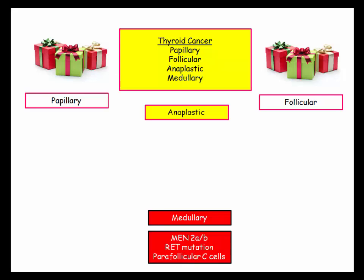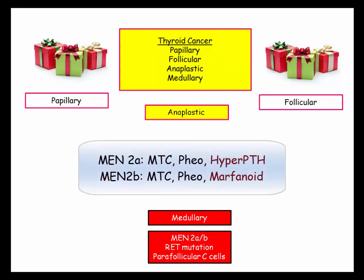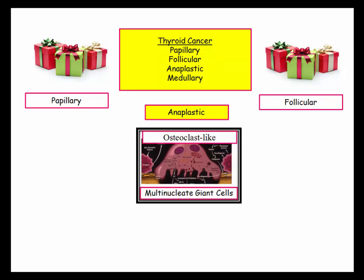When you see medullary carcinoma of the thyroid, you need to automatically think of the MEN syndromes, specifically 2A and 2B. MEN-2 syndromes are both characterized by the presence of medullary thyroid carcinoma and pheochromocytoma. We'll cover medullary thyroid carcinoma here and MEN in the adrenals section. Let's take medullary off the list because it is unique and will be buried in MEN questions.